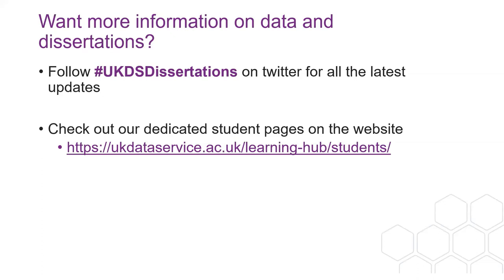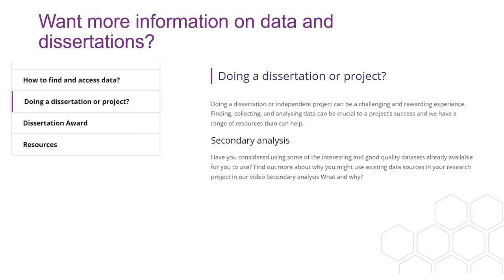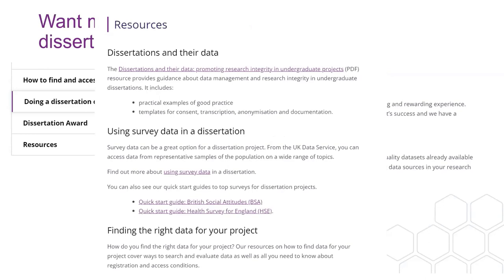To summarize: think about your key concepts and what you're trying to measure, and how these relate to variables in a dataset. Check the catalogue and documentation to understand your data, and make sure you're considering questionnaire routing, derived variables, and sampling. If you want more information on our dissertation resources, keep an eye out on our Twitter for hashtag UKDS dissertations. We also have student pages on the website and a learning hub with a section dedicated to secondary analysis for dissertations, dissertation resources including PDF guides and quick-start dataset guides, and a finding-the-right-data section with videos and worksheets. Thank you, everyone.